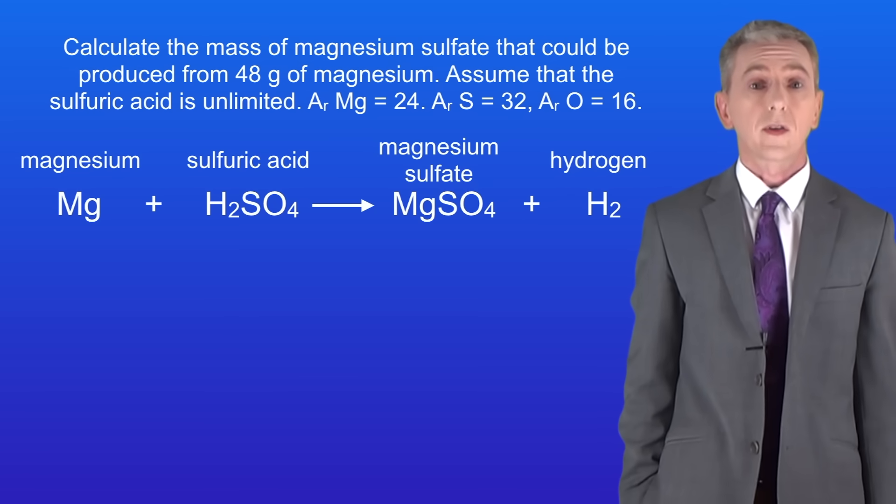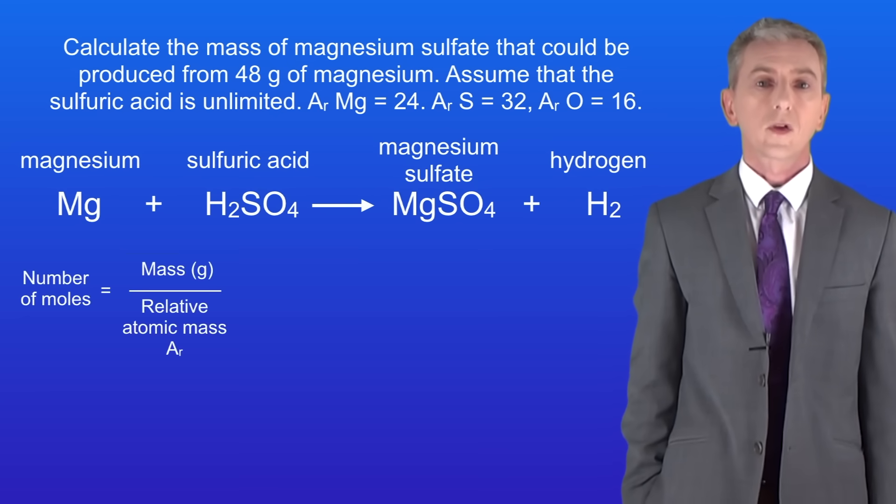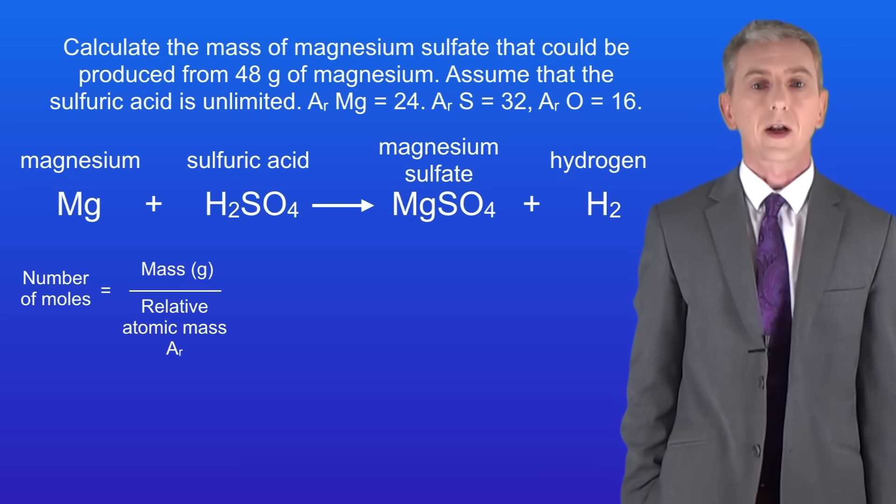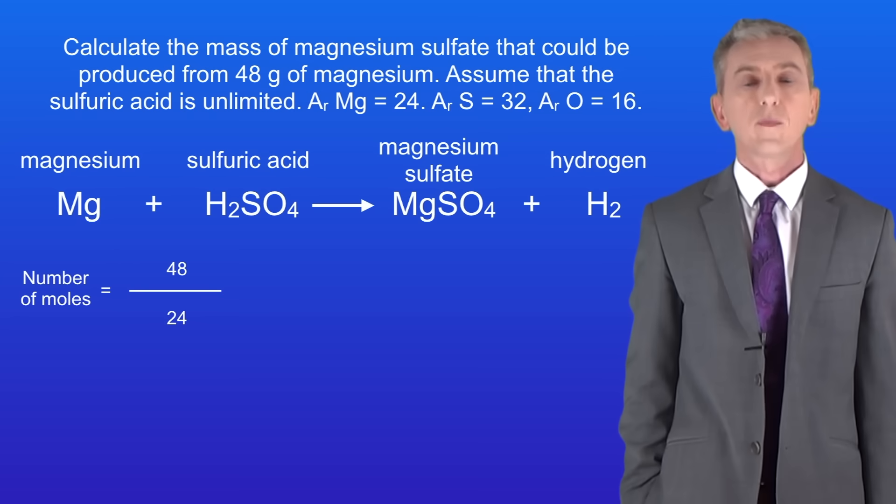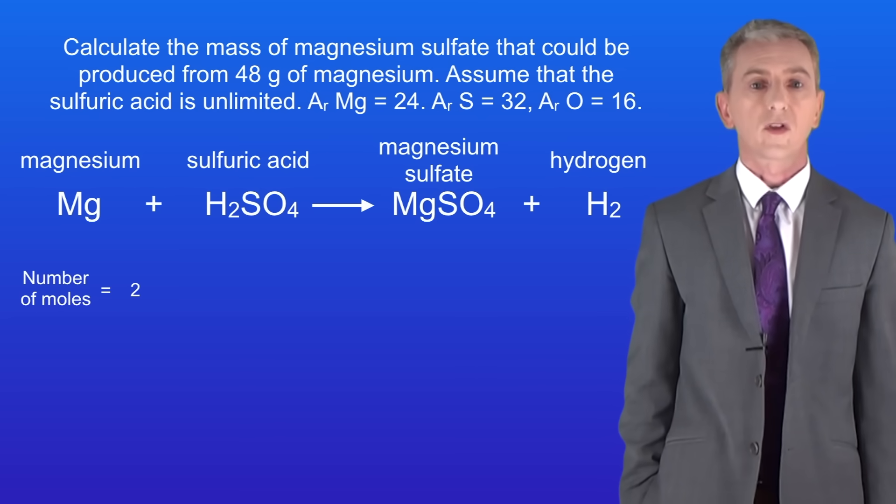Okay, from the large numbers in the equation we can see that one mole of magnesium could produce one mole of magnesium sulfate. So first we calculate the number of moles of magnesium by dividing the mass we've been given by the relative atomic mass. We've been given 48 grams of magnesium and the relative atomic mass of magnesium is 24. So this means that we're starting with two moles of magnesium.